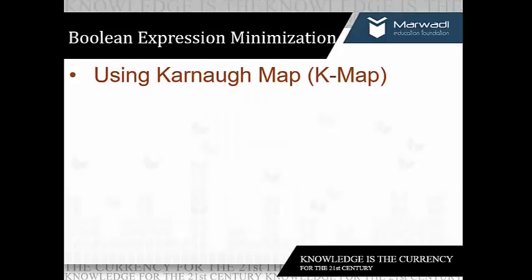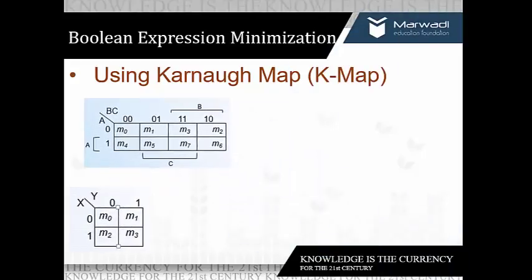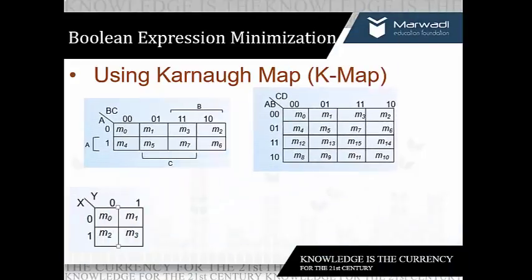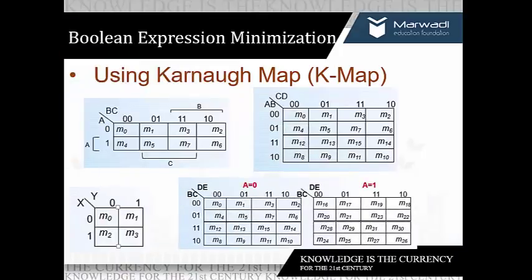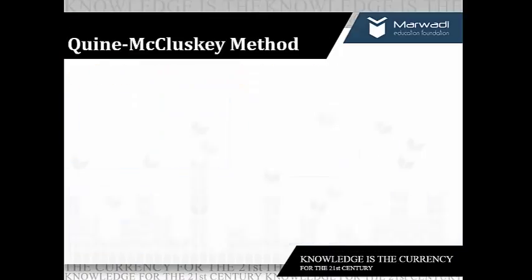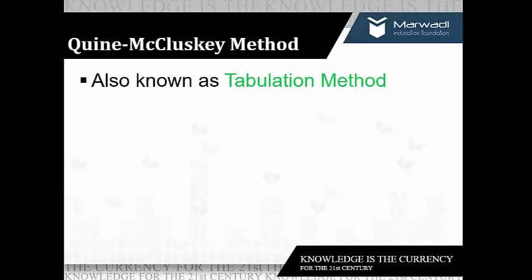The next method is Karnaugh map, well known as KMAP — 2-variable KMAP, 3-variable KMAP, and 4 and 5 variable KMAP. Today we are going to learn a new method, the Quine-McCluskey method, which is also known as the tabulation method.